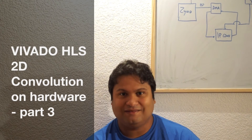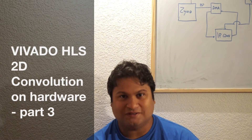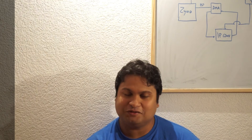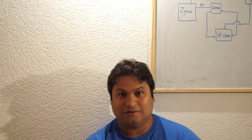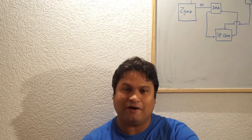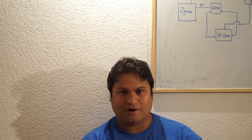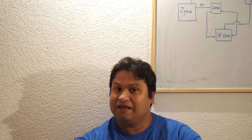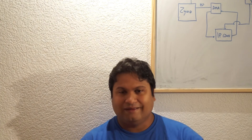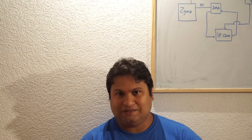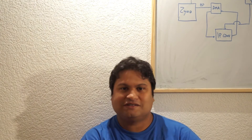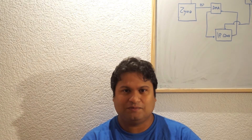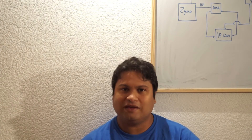Hello guys. So this is the last part of our convolution IP core with Vivado HLS, which is also the end of the Vivado HLS course. This is the part where we're going to bring our IP core to the board — the MicroZ board or ZBoard — it can be an Artix-7 board as well. We're going to send an image through this IP core through a DMA and get back the results.